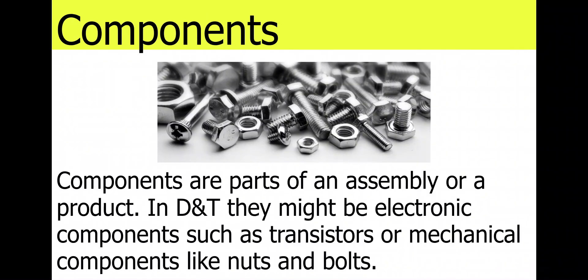Components. Components are parts of an assembly or a product. In D&T, they might be electronic components such as transistors, or mechanical components such as nuts and bolts. So components are simply parts of a product.